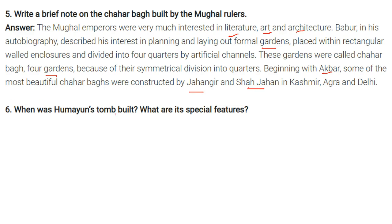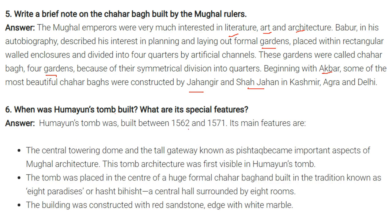Question: When was Humayun's tomb built and what are its special features? Humayun's tomb was built between 1562 and 1571. The main features were the central towering dome and the tall gateway known as Pishtak, which became an important aspect of Mughal architecture. The tomb was placed in the centre of a huge formal Chahar Bagh, built in the tradition known as Eight Paradises or Hasht-Bihisht — a central hall surrounded by eight rooms. The building was constructed with red sandstone edged with white marble.